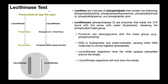In the lecithinase test, the agar is actually composed of egg yolk. The reason for that is egg yolk contains a lot of phospholipids, and that is going to be the substrate that lecithinases will act on. Now if we have a negative lecithinase organism — meaning they do not express lecithinase — you put these organisms on the egg yolk agar and nothing's going to happen. All the phospholipids present in the egg yolk just sit there because they're not being broken down. There's no enzyme in those bacteria to do that, so therefore there's no precipitate. On the left, this would be an example of bacteria that is negative for lecithinase.